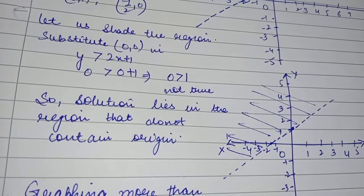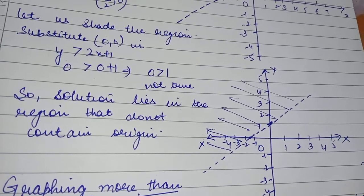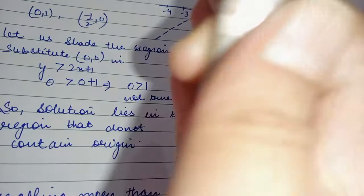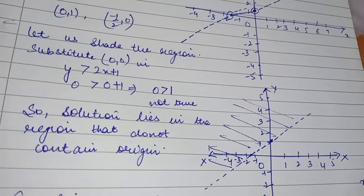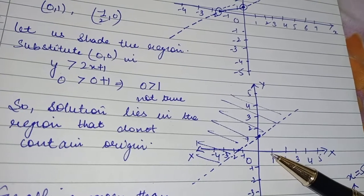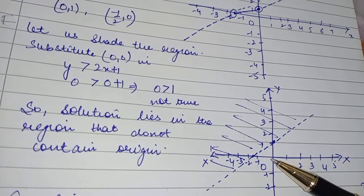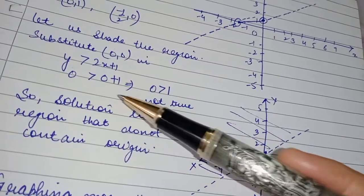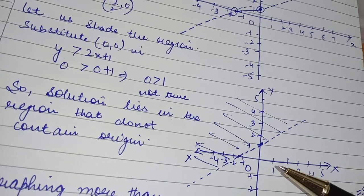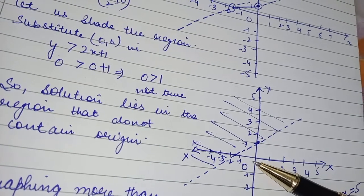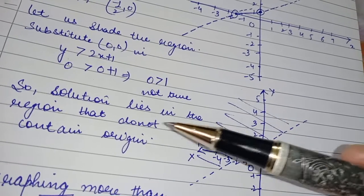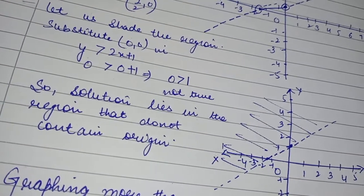Now I need to know which region to shade — we shade the region that contains the solutions. This is region 1 to the right-hand side of the line and region 2 to the left-hand side. Let us take the origin, since it is easy to calculate with. Substituting in the given inequality: 0 is greater than 1, which is not true. It means the region containing the origin will not be shaded. So the other region contains the solution — the solution lies in the region that does not contain the origin, because the inequality is false there.